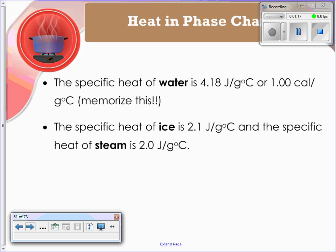Some things you need to know to do these specific type of problems: the specific heat of water is 4.18 joules over grams degree Celsius, or 1.0 calories over grams degree Celsius. Make sure you know that value. The specific heat of ice is going to be 2.1, and the specific heat of steam is going to be 2.0. Make sure you have those values written down somewhere so you can use them as a reference.